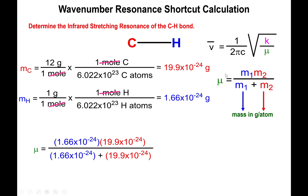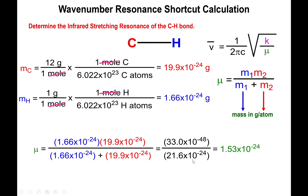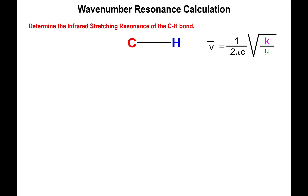We take those masses per atom and plug into the reduced mass equation: mass of hydrogen times mass of carbon, divided by the sum of the masses of hydrogen and carbon. The numerator gives 33 times 10 to the negative 48, and when we add the two masses together we get 21.6 times 10 to the negative 24. Carrying out the division yields 1.53 times 10 to the negative 24. We'll use that value.